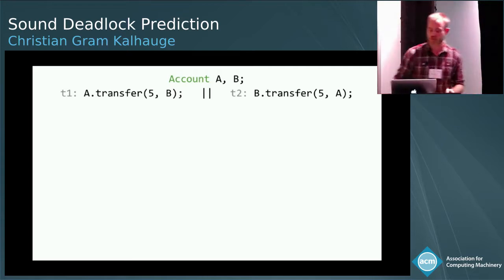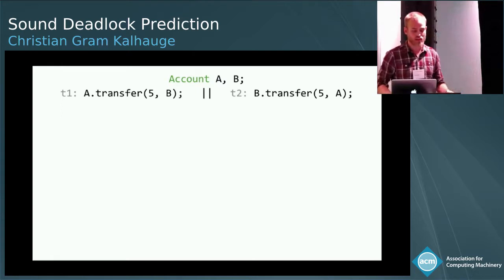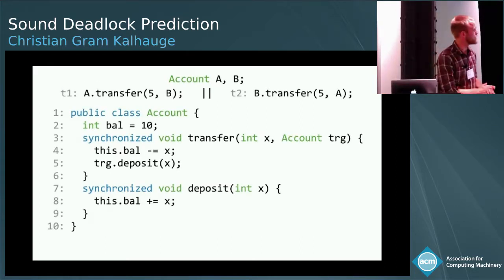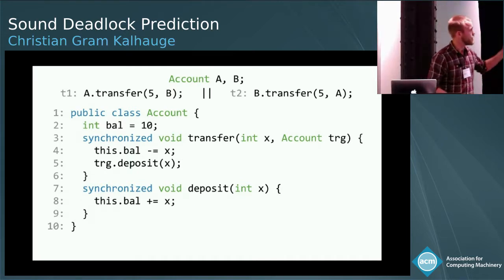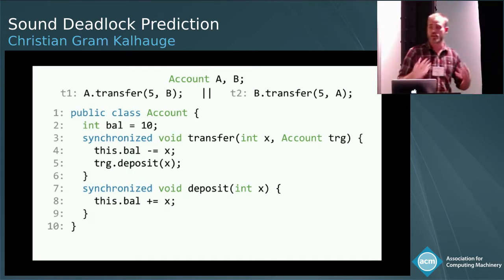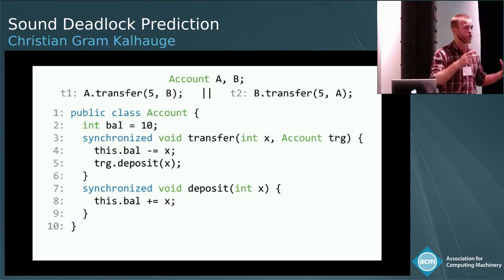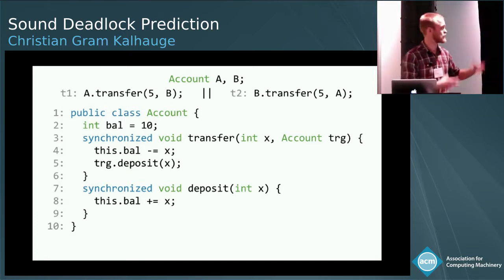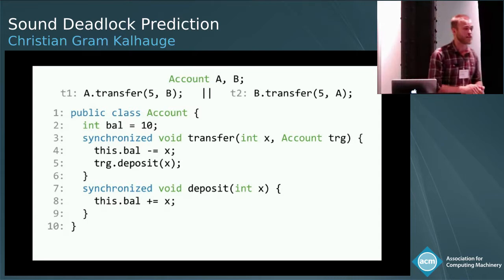So you want to look at the source code first. In this case, we have a simple class. It has one field and two synchronized methods. In Java, synchronization means that no two threads can access the same object's synchronized methods. This is essentially ensured using locks, and this is where the deadlocks come into play.